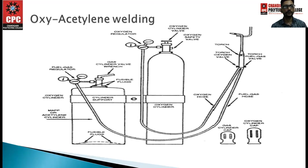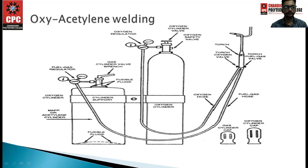In the oxyacetylene welding diagram, the maroon-colored cylinder is the acetylene gas cylinder and the black cylinder is the oxygen cylinder. Pressure regulators are attached to the top of each cylinder, and two hose pipes connect to the torch holder. The torch has a fuel gas valve and an oxygen valve where oxygen and acetylene gas are mixed, then the flame is produced for the welding operation.